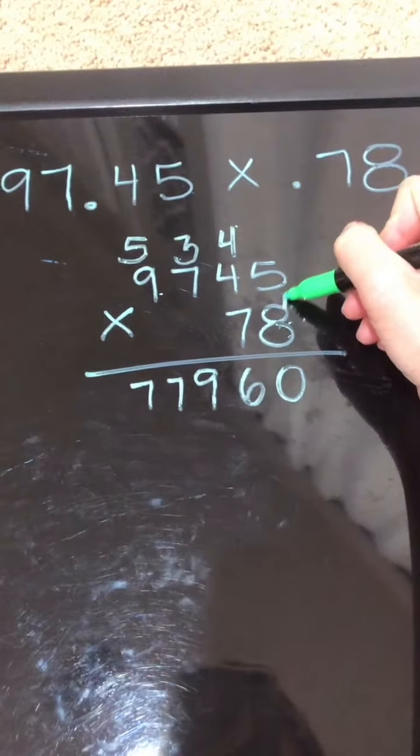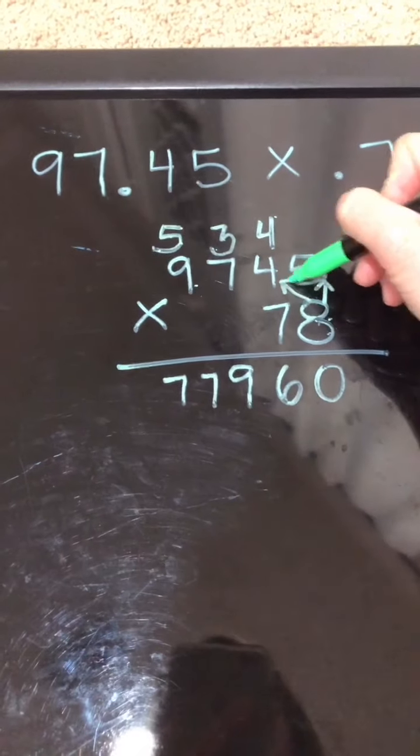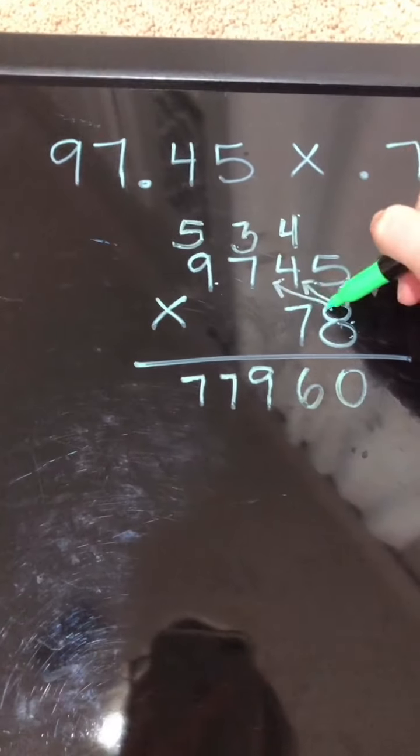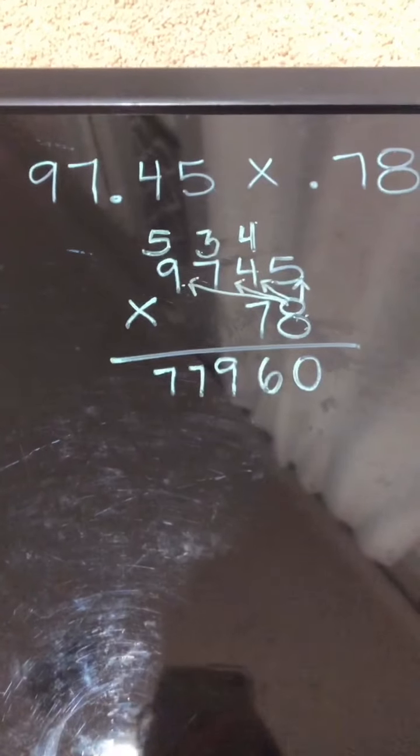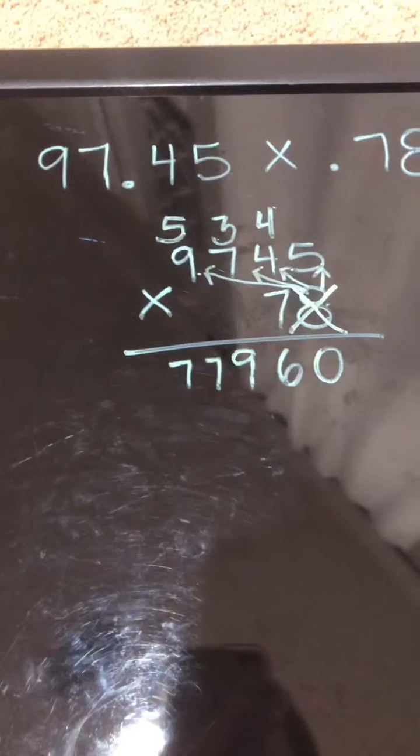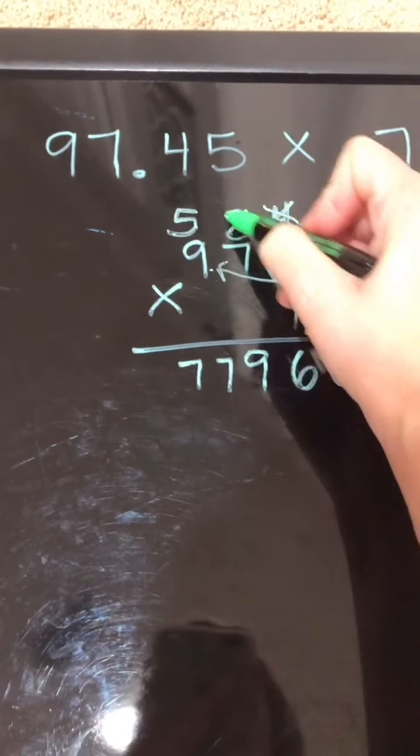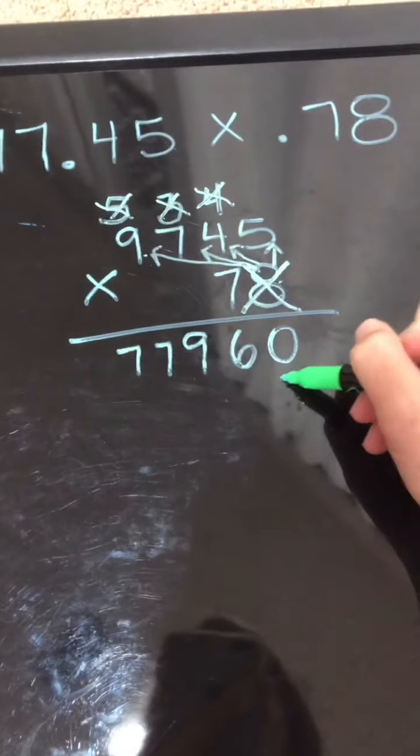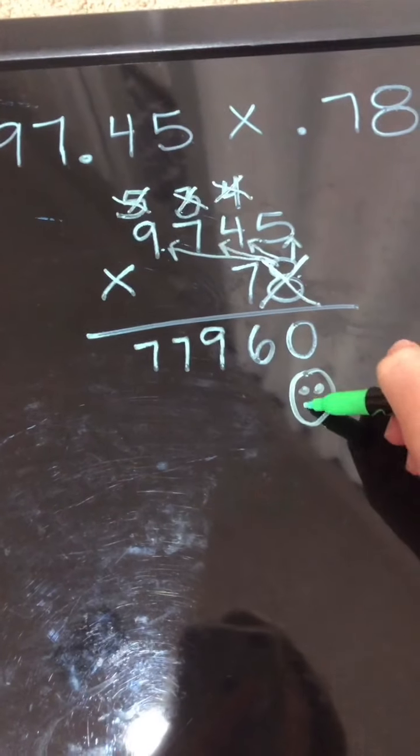In class we draw arrows. So if you would like to draw arrows with that 8 hitting each number you can. You don't have to. Now that I'm done with the 8 I'm going to cross it off. I'm going to cross off all the numbers that I carry and I'm going to put my happy zero which is my placeholder.